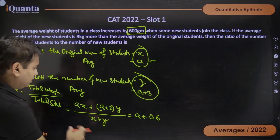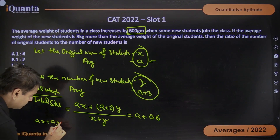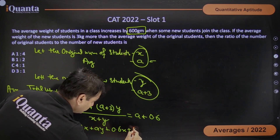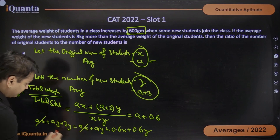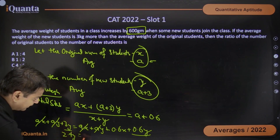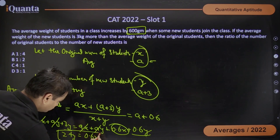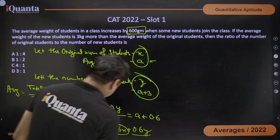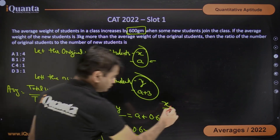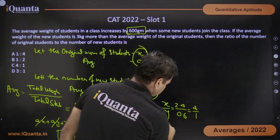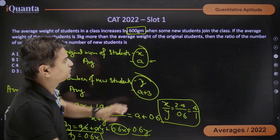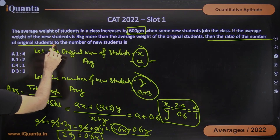Solving this, we get: AX + AY + 3Y = AX + AY + 0.6X. AX cancels, AY cancels. So 3Y minus 0.6Y equals 2.4Y, and this equals 0.6X. This gives us the relation between X and Y: X divided by Y equals 2.4 divided by 0.6, which equals 4 to 1. Here X is the number of original students and Y is the number of new students, so their ratio is 4:1. The answer is C.